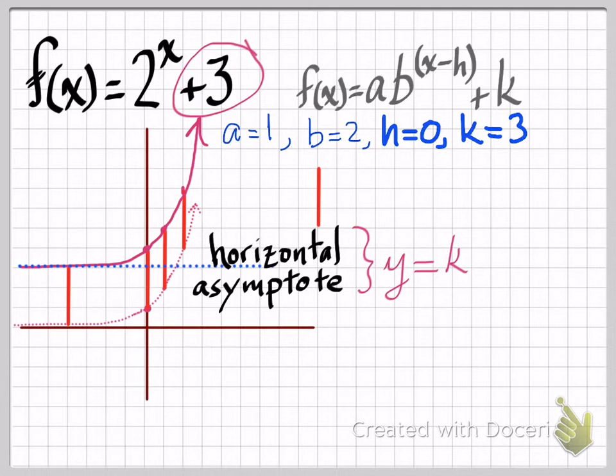And what's really nice about that horizontal asymptote is that it is that k value. Y equals k is the equation of that horizontal asymptote. Y equals 3 in our case here. It's the one thing of these exponential functions that you can actually see in the equation that translates directly to a feature of the graph. Whatever that k value is being added or subtracted to all the other exponential stuff, that is the location of the horizontal asymptote. It's very important and very convenient.